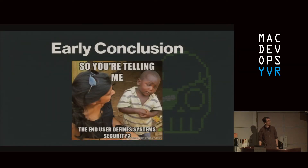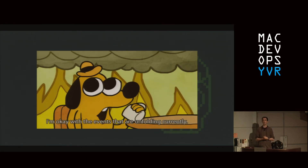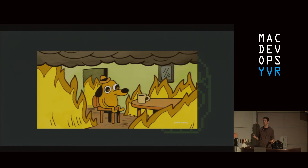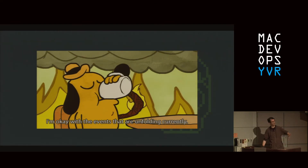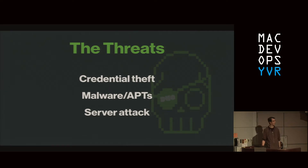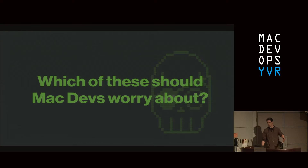So is the user now the most vulnerable point in the system? I think you can say that the end user and the endpoint are the most vulnerable at this point — which is not concerning at all, since we have full control over what our users do, even if those users are ourselves in a DevOps environment. The general threat categories are: credential theft, malware and APTs, and attacks on servers themselves — which for DevOps is still a significant target.